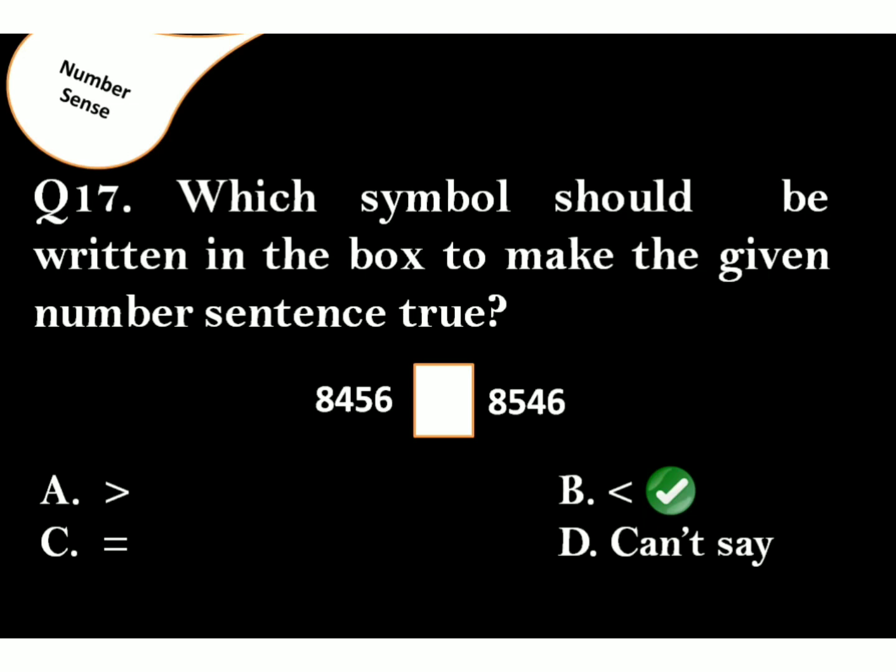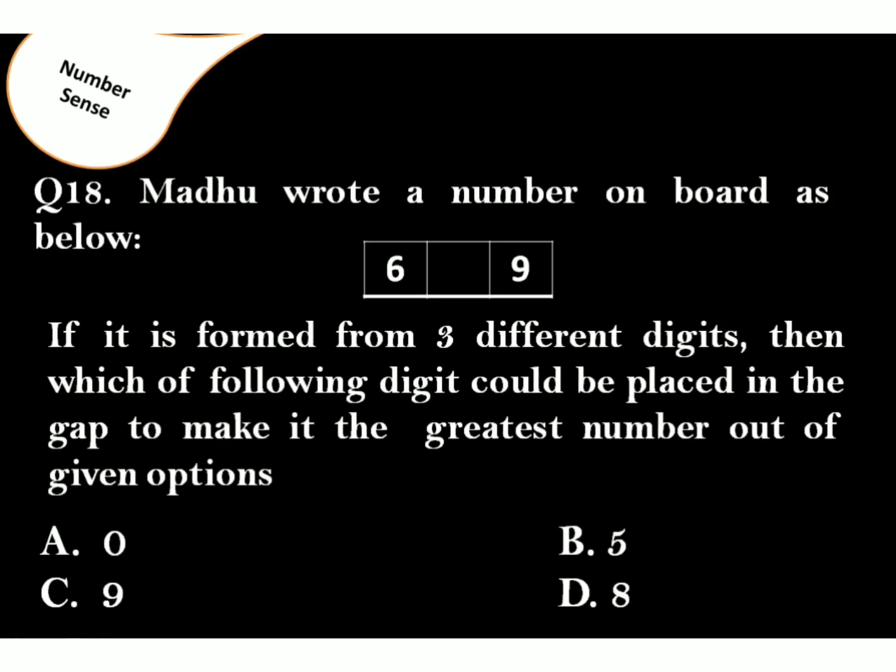Madhu wrote a number on board as below. If it is formed from three different digits, then which of the following digits could be placed in the gap to make it the greatest number out of given options? The correct answer is option D. If you are thinking option C is the correct answer, then you should notice the words different digits. As 9 is already on the board, we cannot choose option C. Hence, we are left with the option D.